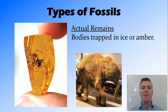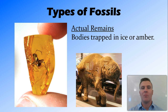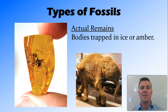Now there are a few different types of fossils. The first type is actual remains, and this is where bodies are trapped in ice or in amber. You can see here this insect is trapped in amber, and this mammoth — a baby mammoth — is an example of one that fell through the ice in Siberia and was frozen in time for us to find.